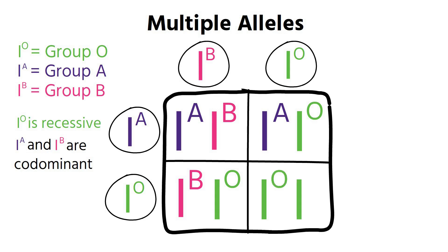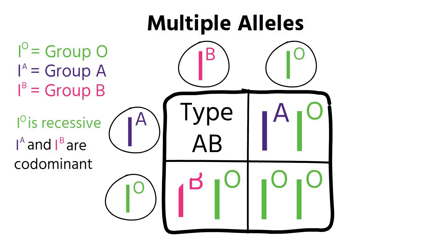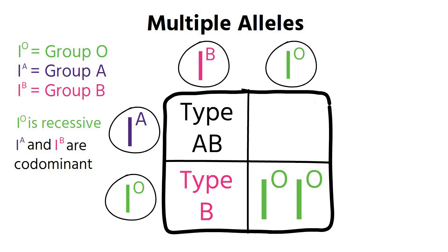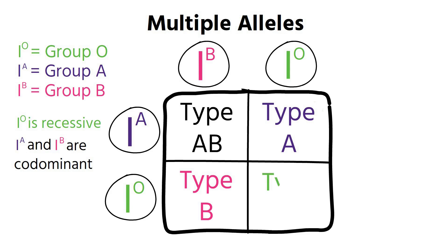Interestingly, blood group O is actually very common in the UK even though it's recessive, because most people are descended from I superscript O, I superscript O. You have to remember that codominant alleles affect the phenotype differently — both are expressed, giving a mixture. With multiple alleles it gets more complicated because individual alleles can be recessive or codominant, so keep that in mind.